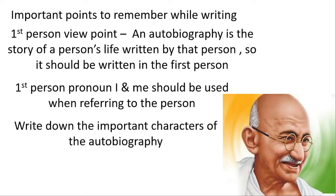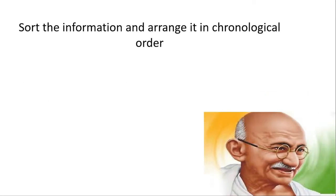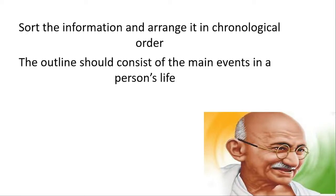Then write down the characters of the autobiography. Then you have to jot down your thoughts in the form of points. Then you will sort down the information and arrange it in chronological order, and see that the outline should consist of main events in a person's life.